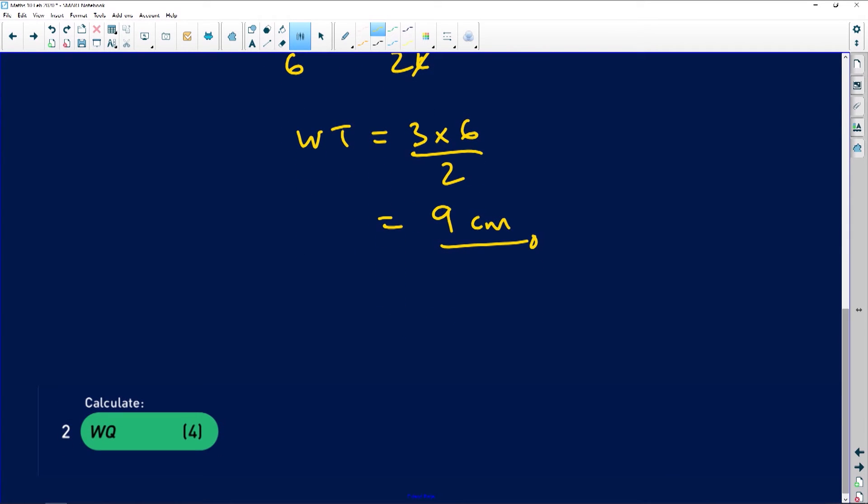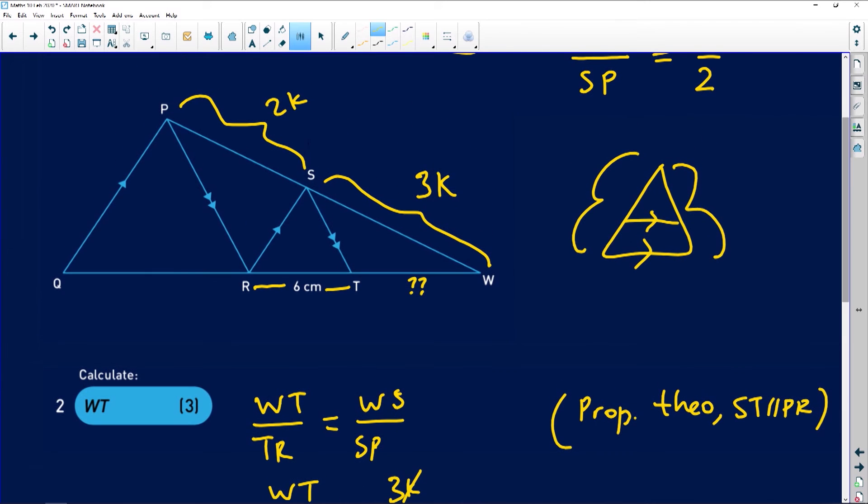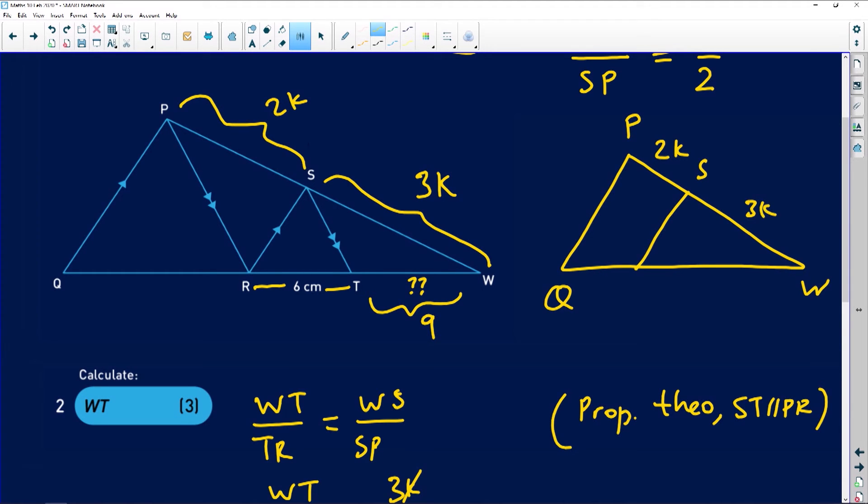The last part of the question says we need to now calculate WQ. We now know that this is actually 9 units. When I'm trying to figure out what WQ is, I'm going to look at the following triangle. I'm going to look at this triangle right there that has P here, that is Q here, that has got W here. We know that this is 2k, we know that this is 3k. Now this is 9 plus 6, which gives you 15 centimeters. We don't know what this is, but we're trying to figure out the whole length of WQ.